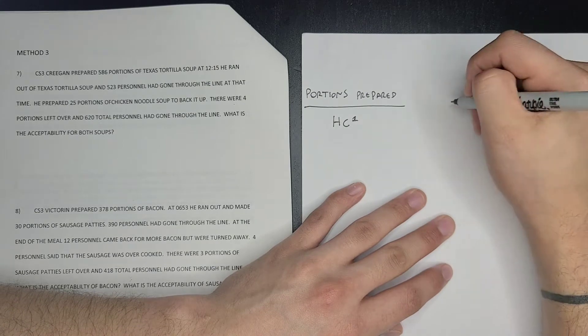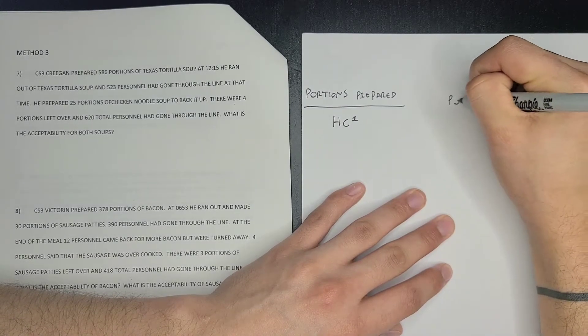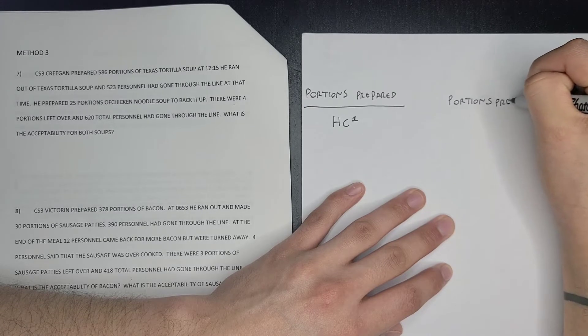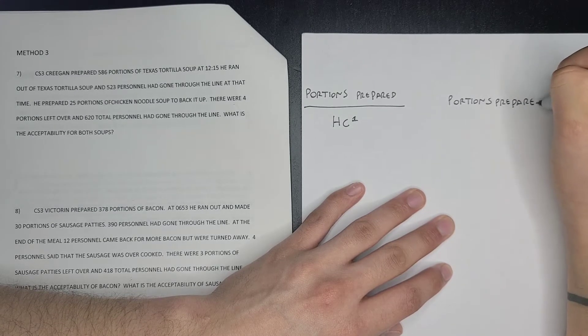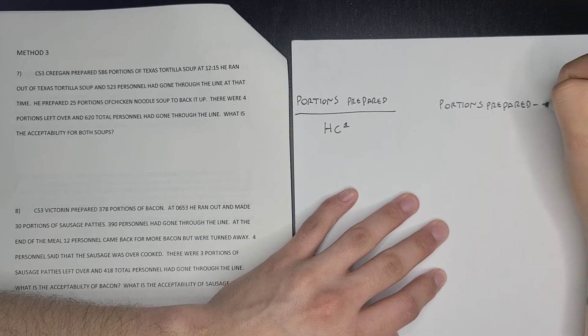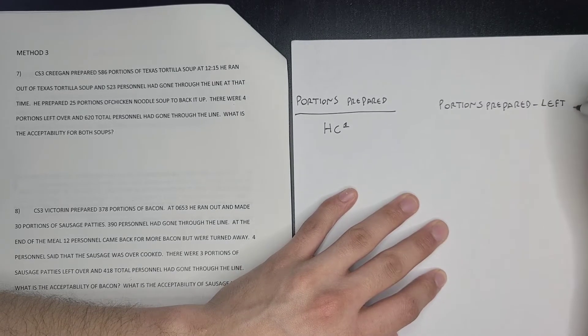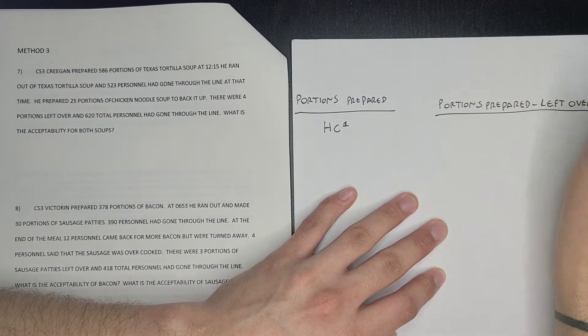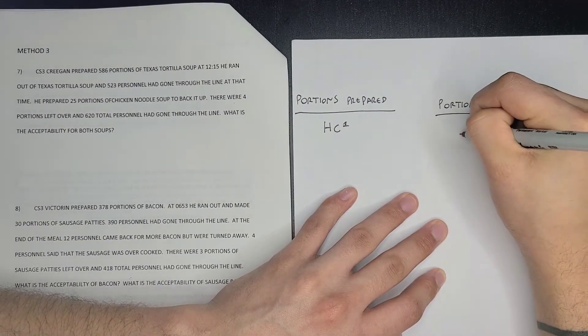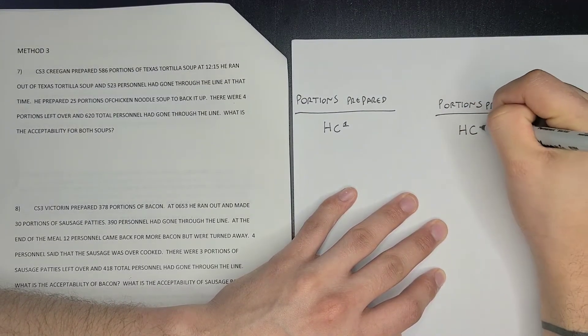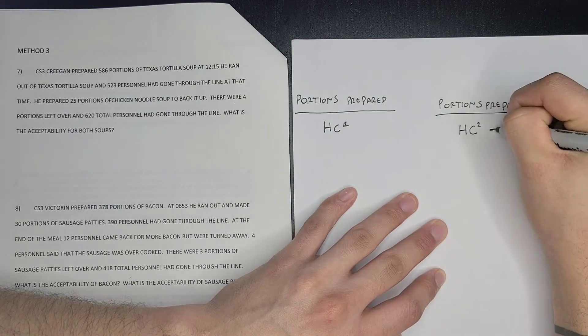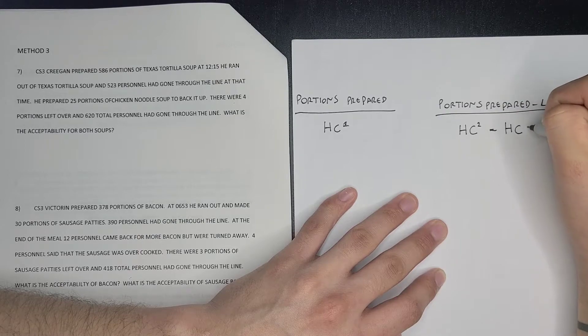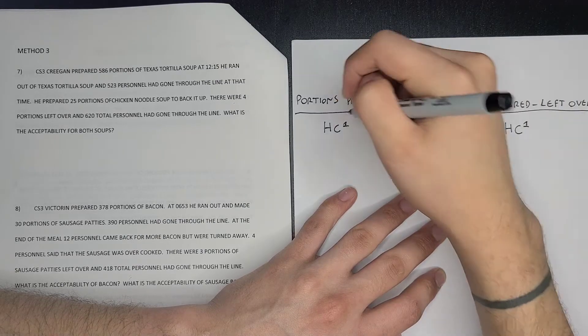The second part to it is your portions prepared minus your leftovers, and then you're going to divide it by your second head count. So head count two minus head count one.